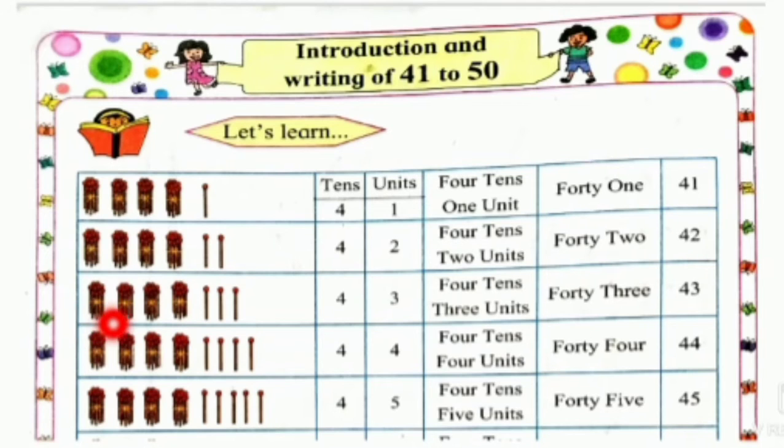Similarly, here 4 tens and 3 units. 4 tens and 3 units is 43. 4 tens and 4 units is 44. 4 tens and 5 units is 45.